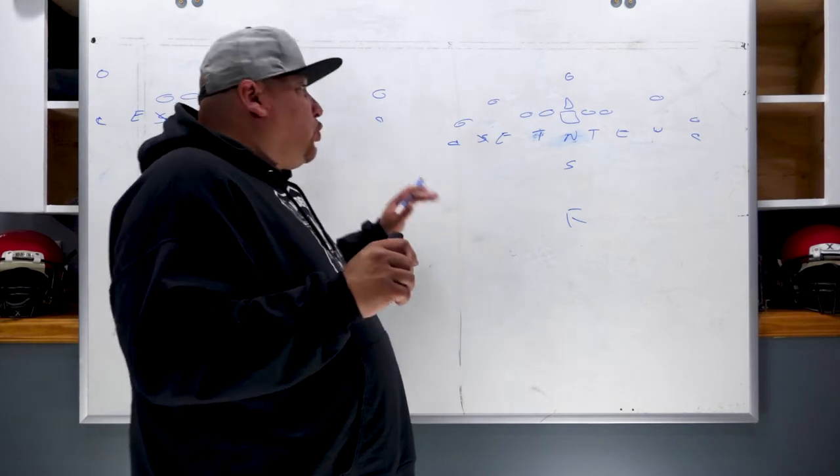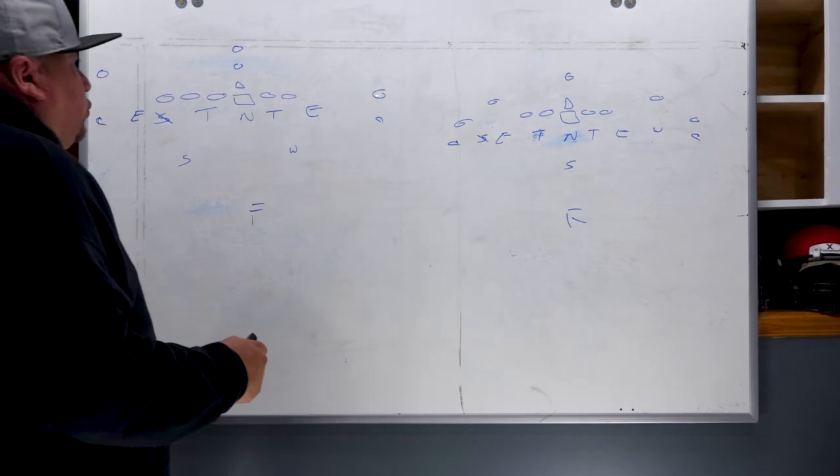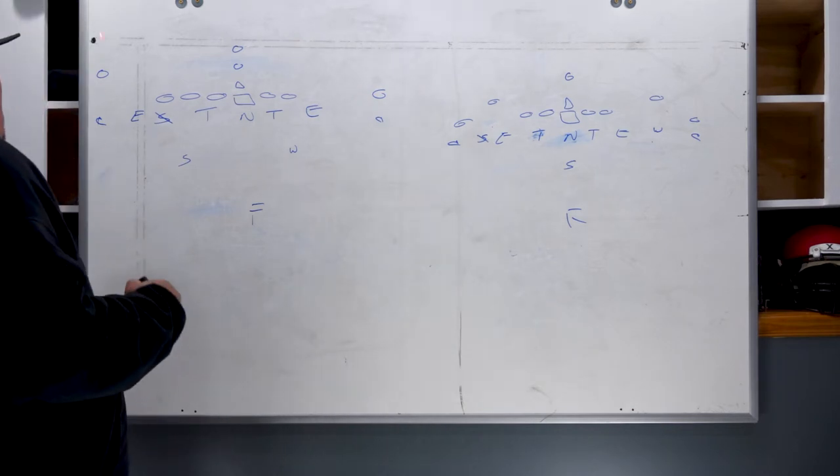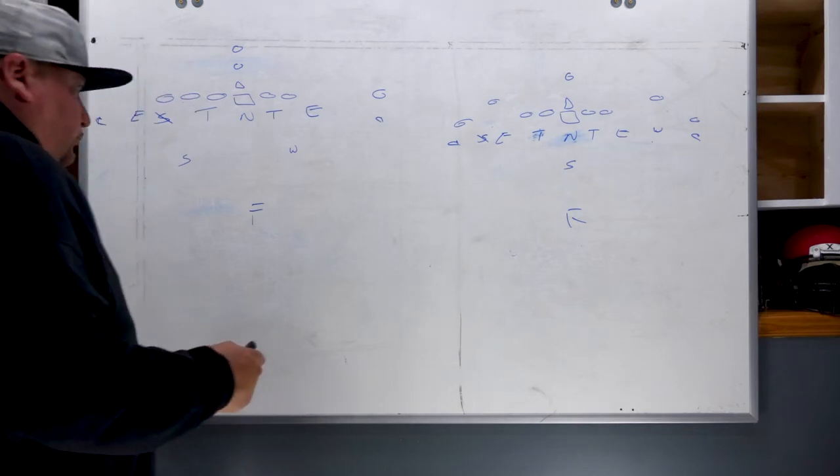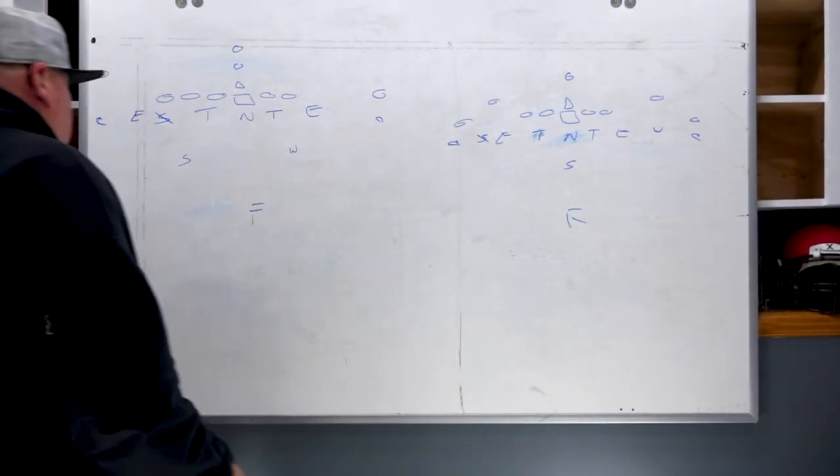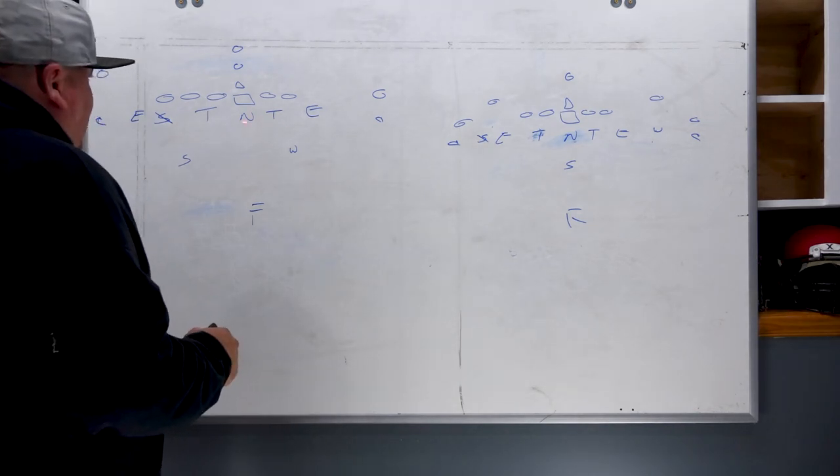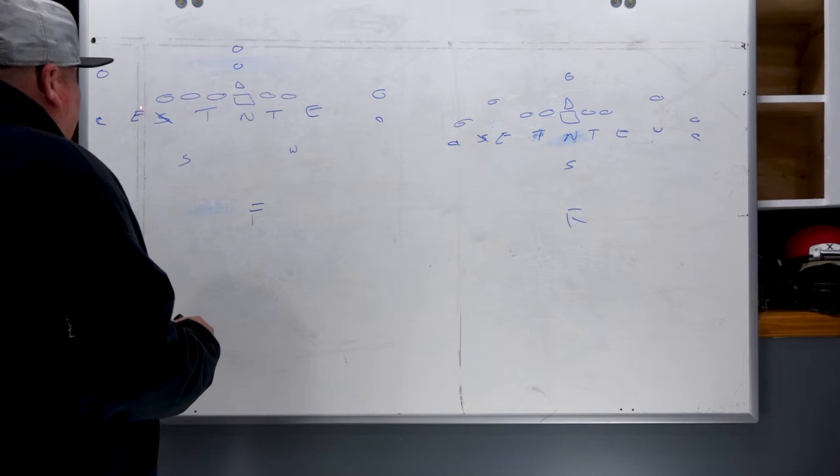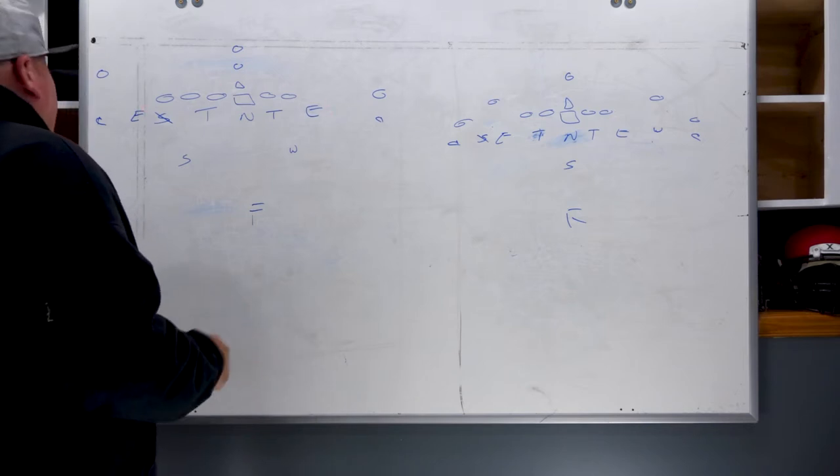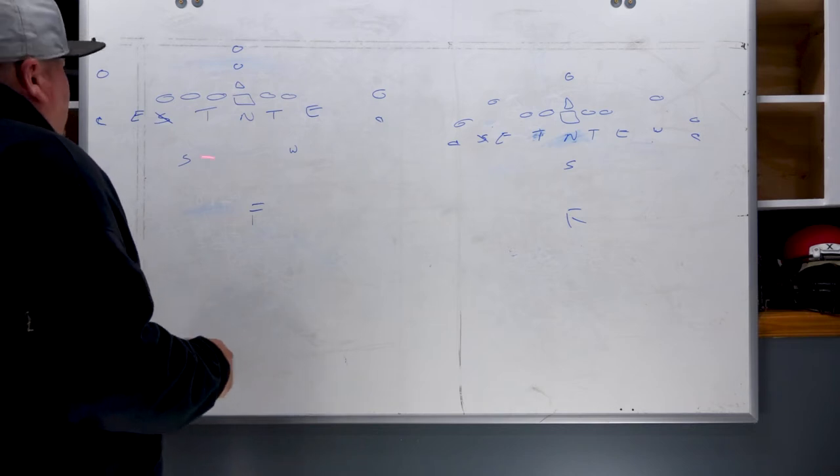So corners are always locking up on number one. We count threats from outside in. Corners are always man-to-man on number one. We're always going to line up with two three-techniques and a zero-shade nose. Defensive ends are always coming; they have no pass responsibility. The remaining linebackers: you have a Sam, a Will, and a Mug.